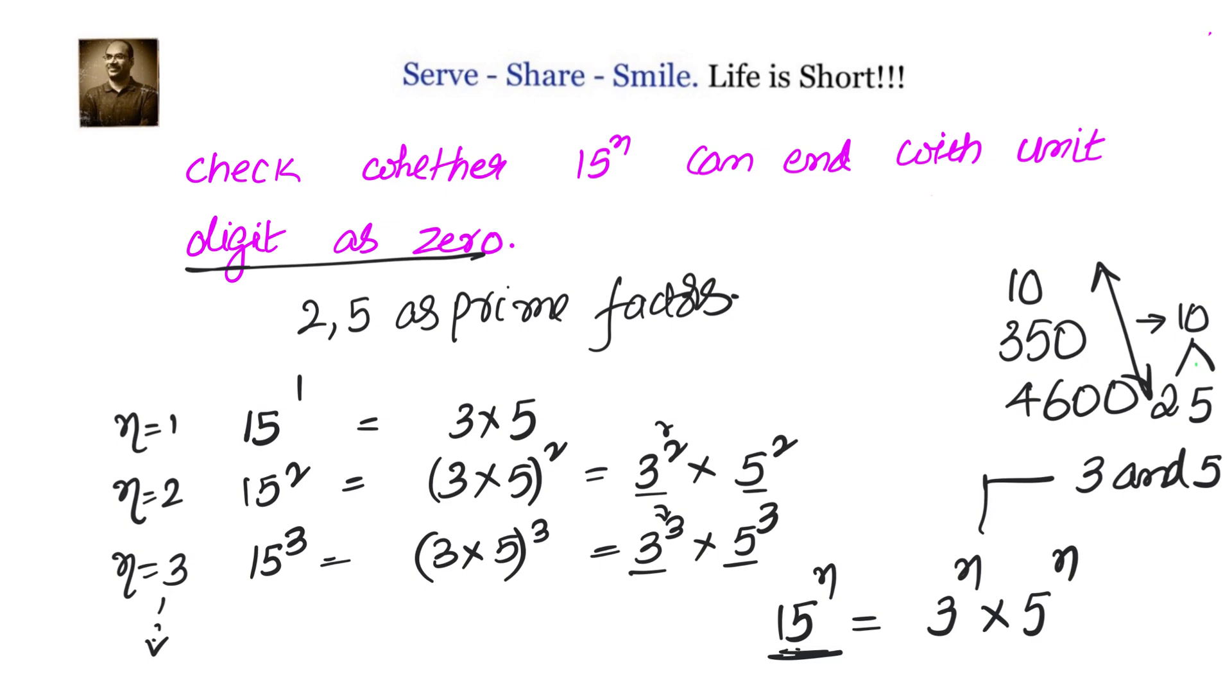So since we don't have 2 as a prime factor, and 15^n will always end up with the form 3^n × 5^n, there is no chance for 2 to enter into the prime factorization of 15^n. Therefore, 15^n can never end with unit digit as 0.